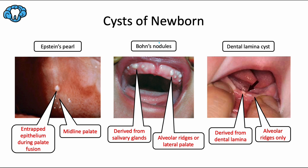Bohn's nodules are also small, whitish-yellow cysts that occur either on the lateral palate or on the alveolar ridges, but not at the midline palate. I remember this because P for pearl is also for midline palate, and the N is for not the midline palate — but they can occur everywhere else, scattered throughout the palate or on the buccal or lingual surfaces of the alveolar ridges. These are thought to be derived from the remnants of minor salivary glands, hence why they were originally called mucous gland cysts. They too are fairly common, but less common than Epstein's pearls.